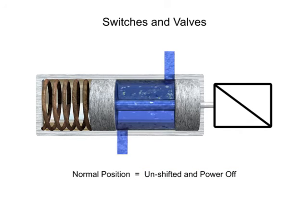This means that any mechanical actuators, such as springs, are in their non-actuated positions. Electrical actuators, such as solenoids, are powered off. The normal position can sometimes be referred to as the unshifted, de-energized, or unactuated position.